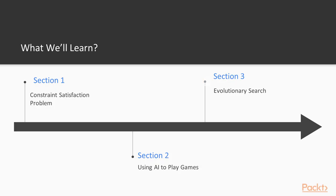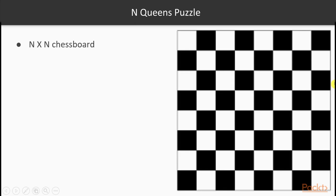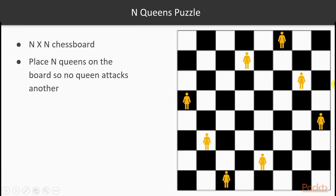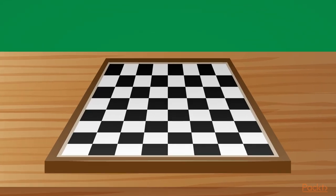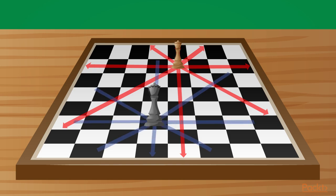In section 3, we will learn about evolutionary search while developing the N-Queens puzzle. At the end of that section, you will try to develop an application by yourself. In the N-Queens puzzle, we have an N×N chess board and we need to place N queens on the board so that no queen attacks another queen. Note that queens attack each other horizontally, vertically, and diagonally.